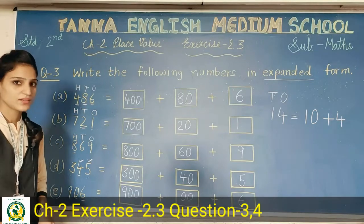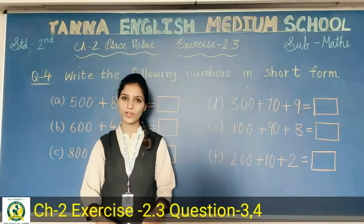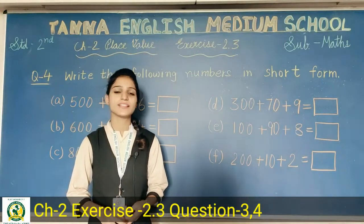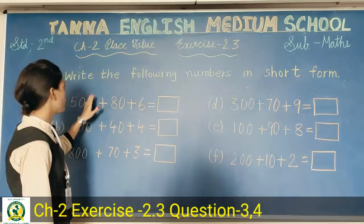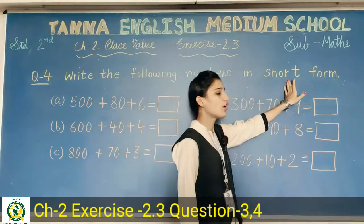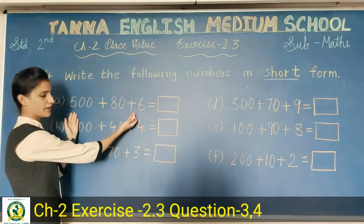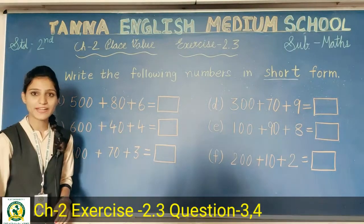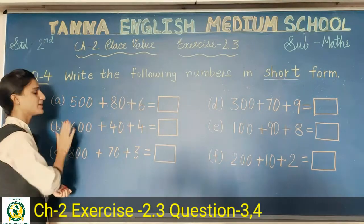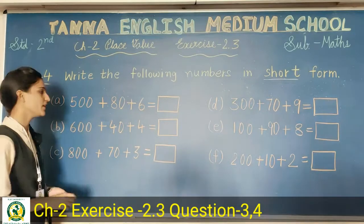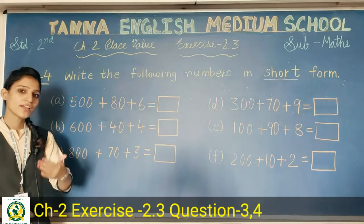Question number three is done. In question three we learned how to write numbers in expanded form. Now we will do question number four. Question four is: write the following numbers in short form. The expanded form is already given and we have to write the number in short form. Let's see the first one.